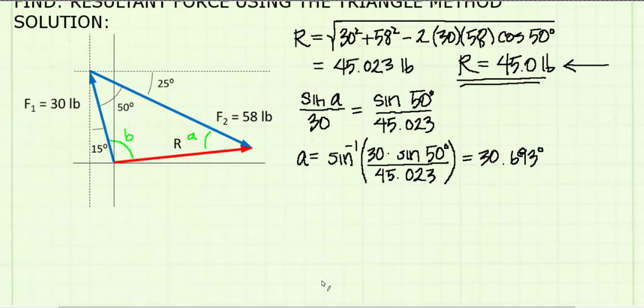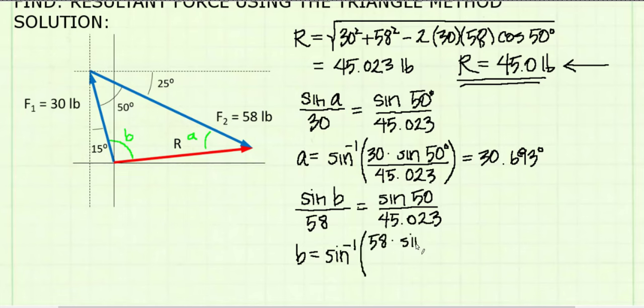Now I will do the same for angle B. To find angle B, I will take the sine of angle B divided by the length of the opposite side, 58 pounds, and set it equal to the sine of 50 degrees divided by its opposite side, 45.023 pounds. And solving for angle B, I get 80.695 degrees.